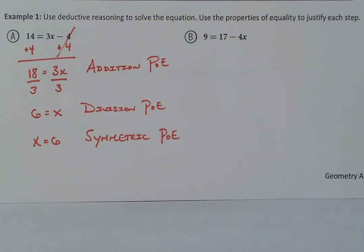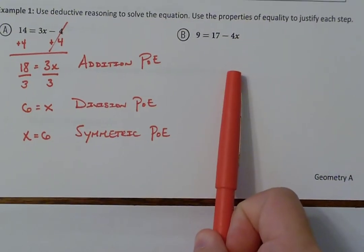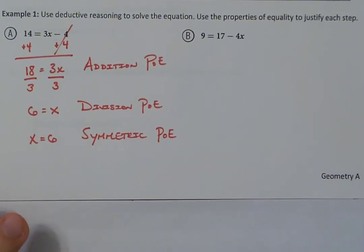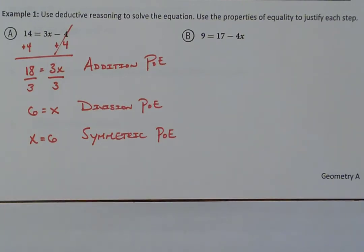That is how we go through and solve using properties of equality — justifying or giving our reasoning for each step. It seems redundant, but it shows how to see proofs done with a familiar example. Part B is left for you to do on your own; you can check the completed notes for guidance.